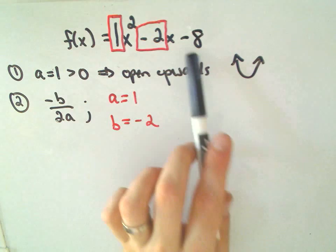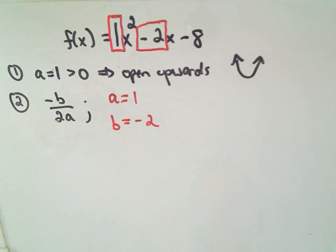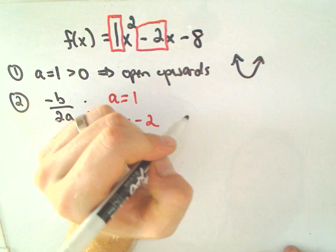It turns out that the constant has no effect on the vertex. Well, I shouldn't say it has no effect. It's going to have no effect on the x-coordinate of the vertex. It certainly will affect its y value. Let me be careful about what I say there.